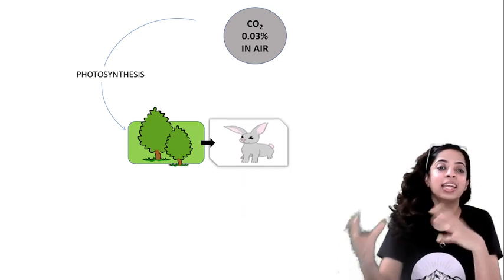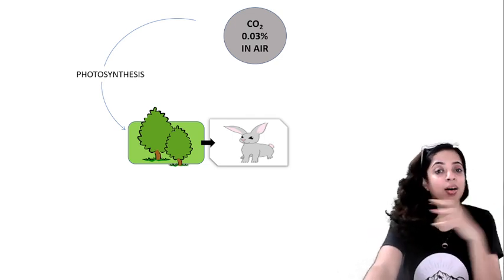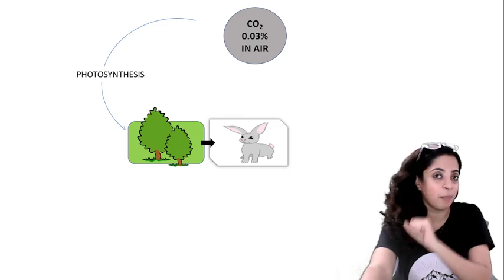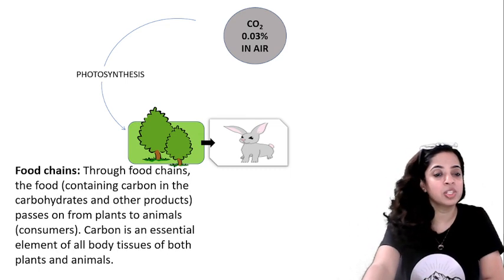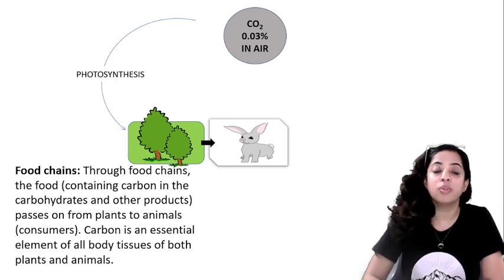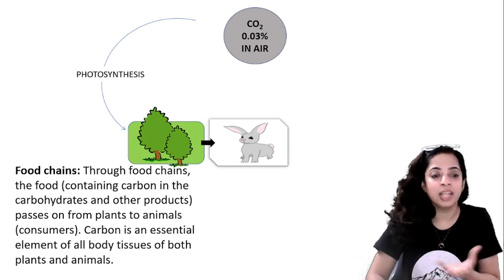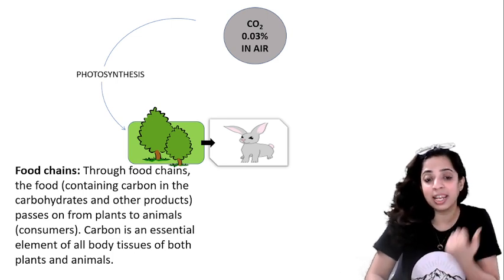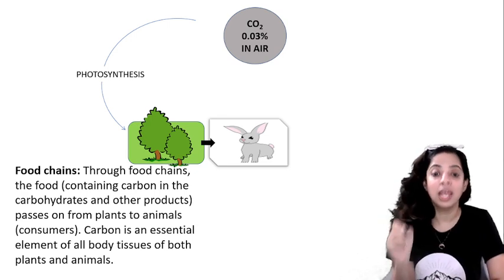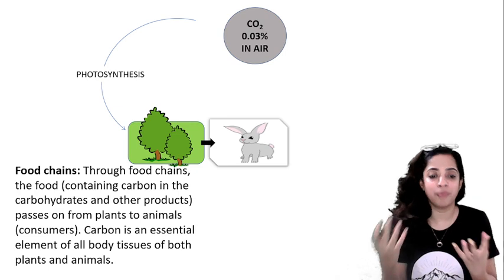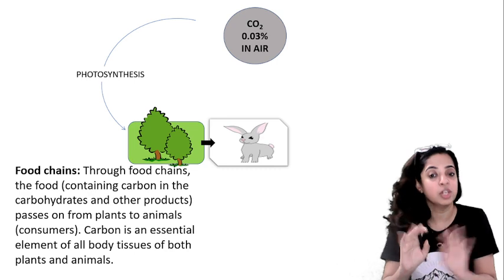The second step is food chains. When an animal such as a rabbit eats that plant, or another animal eats the rabbit, carbon is passed along. Through food chains, the food containing carbon in the form of carbohydrates and other products passes from plants to animals — that is, consumers. Carbon forms an essential element of all body tissues of both plants and animals.